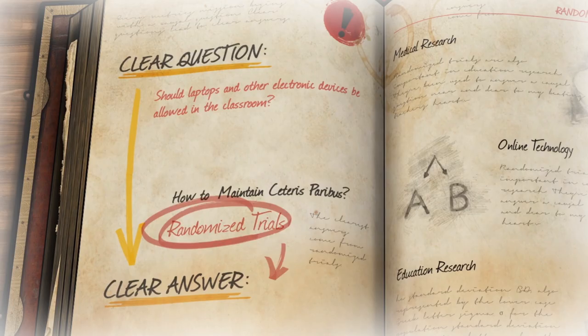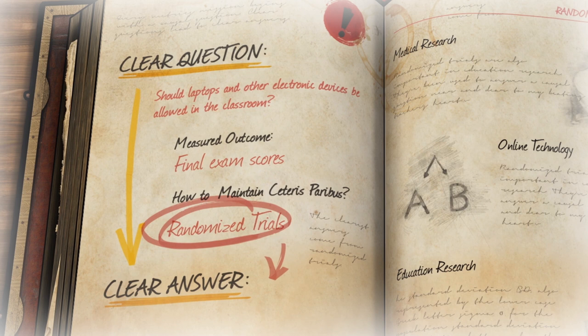Every causal question has a clear outcome, the variables we hope to influence, defined in advance of the study. The outcomes in the West Point electronic study are final exam scores. The study seeks to answer the following question: What is the causal effect of classroom electronics on learning, as measured by exam scores?